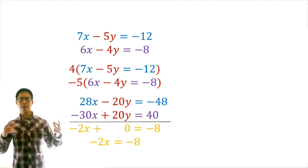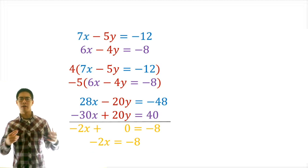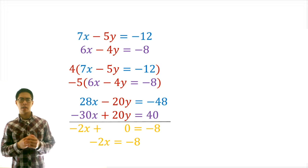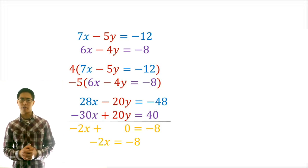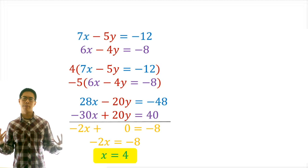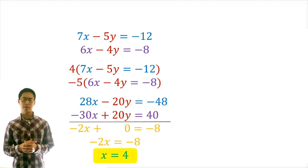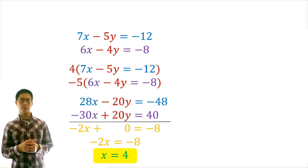Notice that now we have gotten rid of the y variable, which was our goal. Step 4, we solve for the remaining variable. We'll divide both sides by negative 2, which gives us x equals 4.